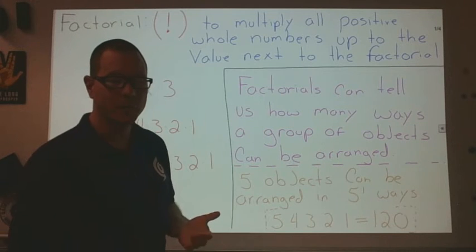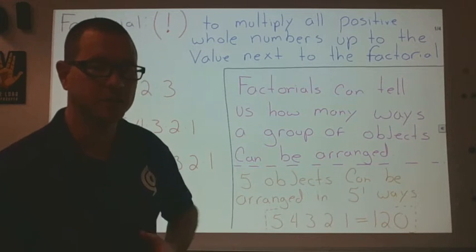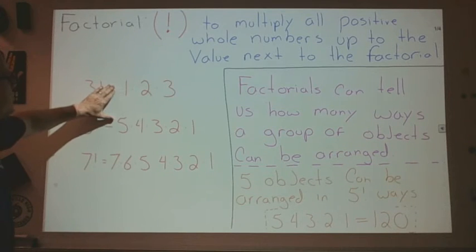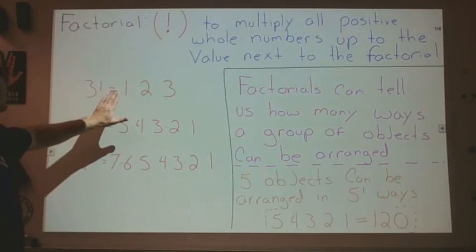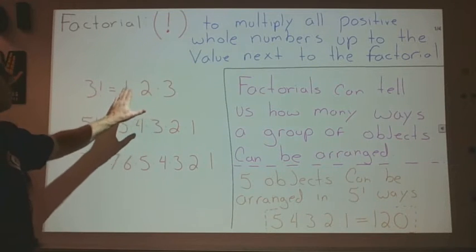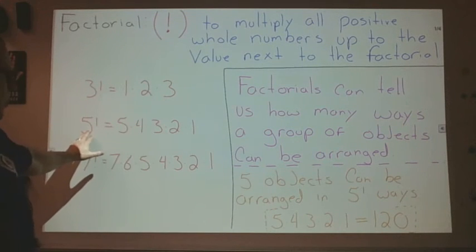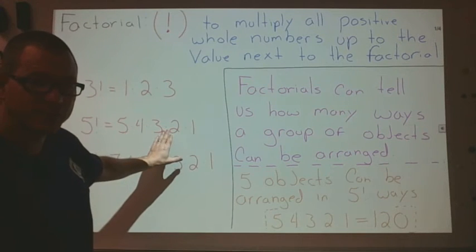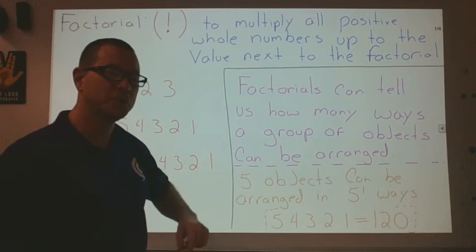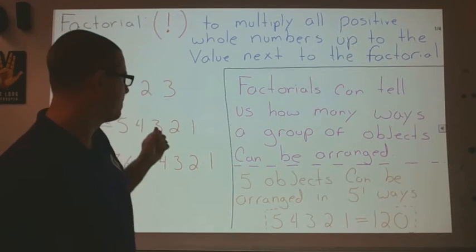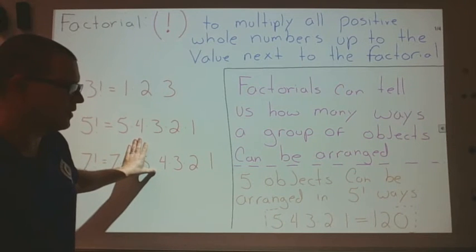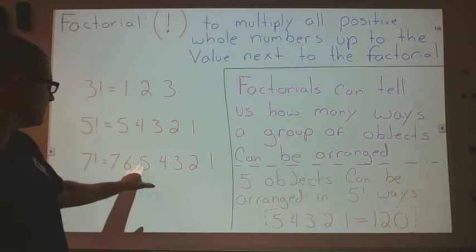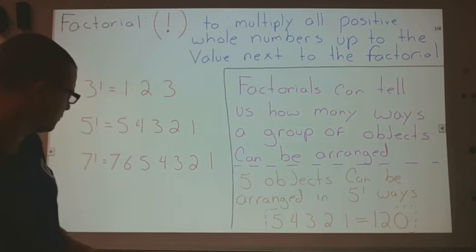A lot of times we won't actually include the 1, because multiplying by 1 doesn't change the value. You'll also notice that on the 3 factorial, I counted up from 1: 1, 2, 3. For 5 factorial, I counted down from the 5. Counting down from the number to 1 is usually easier when we're doing algebra with these, but you can do it either way — it doesn't really matter. 7 factorial: 7 times 6 times 5 times 4 times 3 times 1.